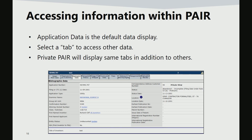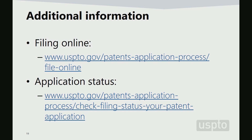There are various tabs to review other data associated with the application. For additional information regarding filing online through EFS web, please visit www.uspto.gov/patents-application-process/file-online. For additional information regarding Private PAIR, please visit www.uspto.gov/patents-application-process/check-filing-status-your-patent-application.